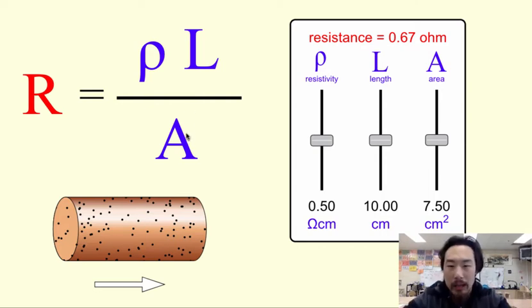Divided by the cross-sectional area. Now usually resistors come in the form of a cylinder, so the cross-sectional area for us would be pi R squared.